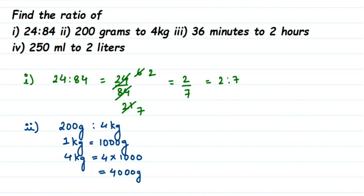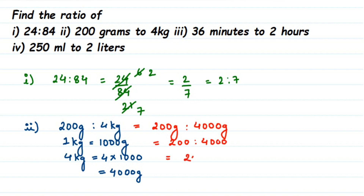So 200 grams is to 4 kg can be written as 200 grams is to 4000 grams. Both are in the same unit, so we remove the units and write 200 is to 4000, which equals 200 by 4000. Cancel the zeros — we get 2 by 40. Cancel by 2: we get 1 by 20. In ratio form, this is 1 is to 20.